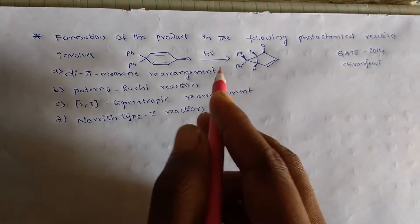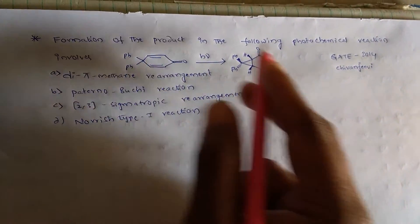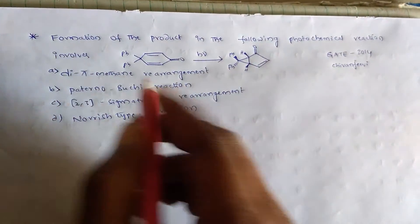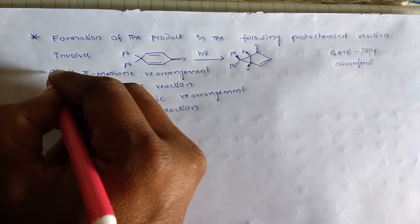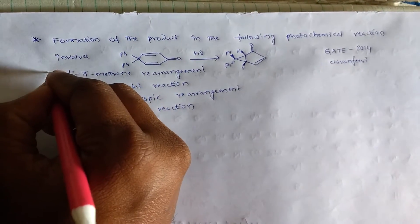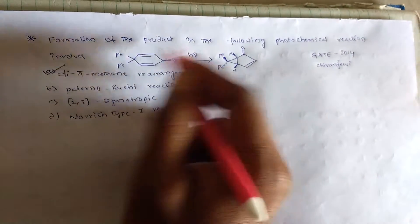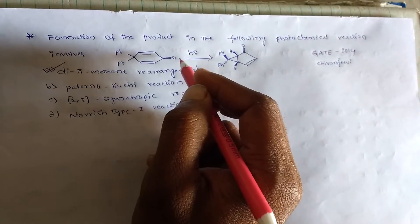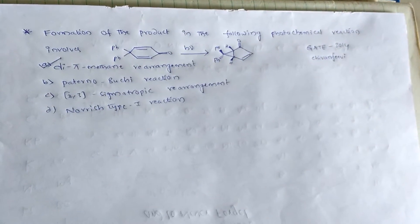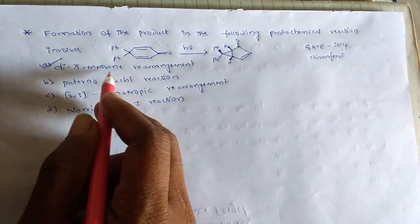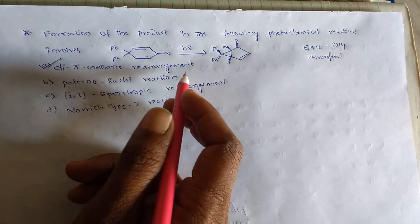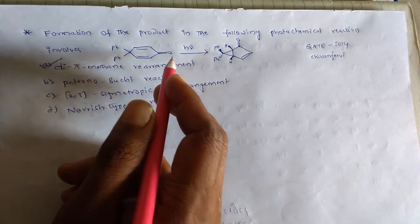So this mechanism — in this reaction, di-pi-methane rearrangement is involved. So this is the correct option for this problem. Let's see how di-pi-methane rearrangement is involved in this reaction.